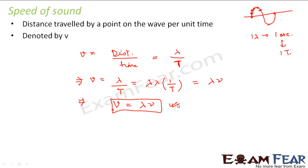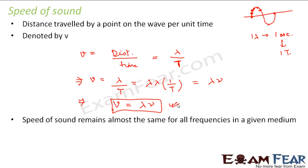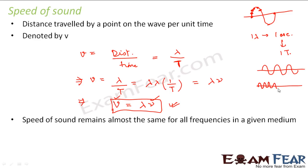This proves to be a very important relationship. Speed of sound remains almost the same for all frequencies in a given medium. As frequency changes, wavelength also changes accordingly. If you have a sound wave and you increase its frequency, the waves come closer together — frequency increases, wavelength decreases.